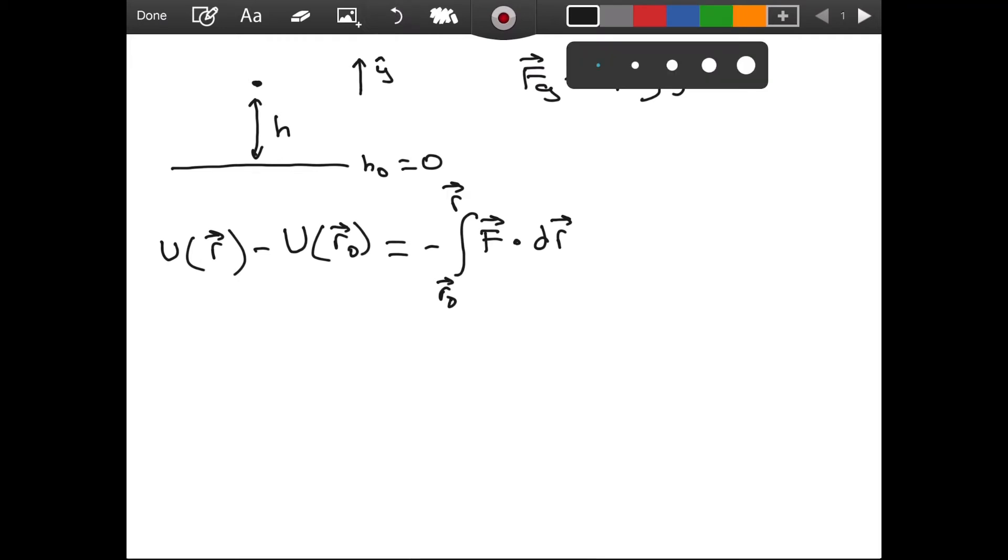And for dr, we are in three dimensional space right now. So it will have a dx, x hat component and a dy, y hat component and the dz, z hat component. Of course, some of these components might be equal to zero. But I want to make the general proof. That's why I am including all three components.